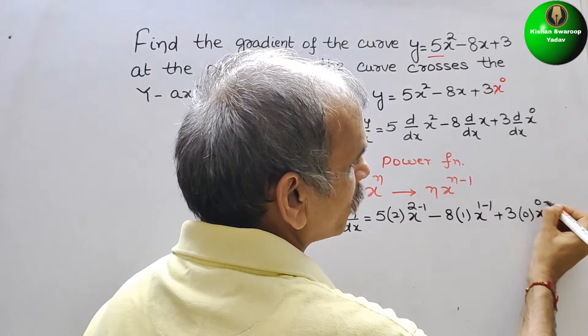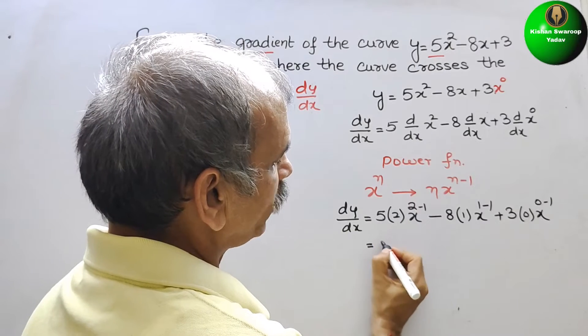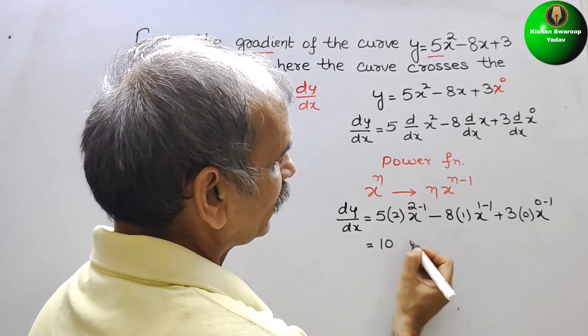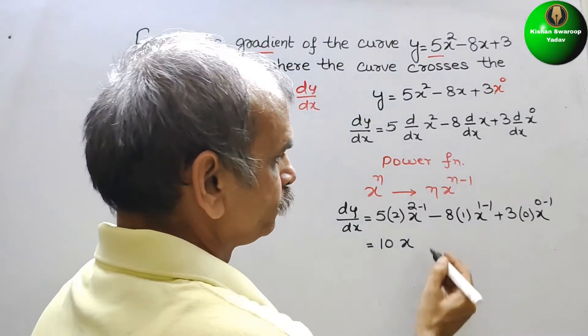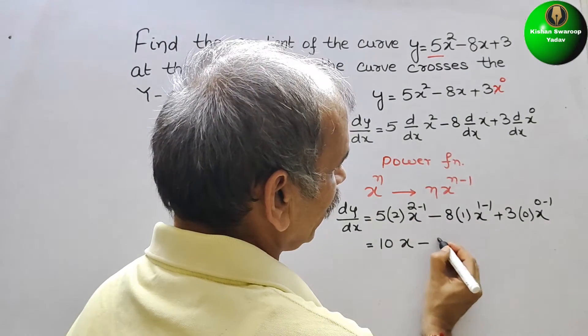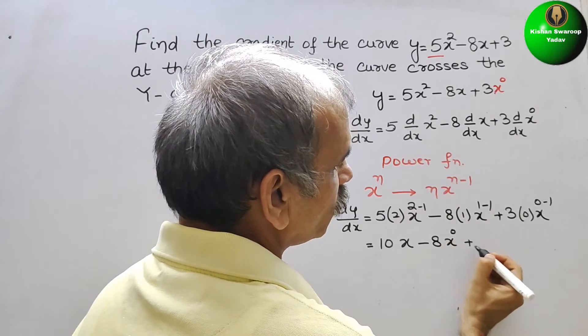Therefore, we will get 0 minus 1. So this is what 5 into 2 is 10 and here comes your x, 2 minus 1 is 1. This is minus 8 x to the power of 0 and plus 0.